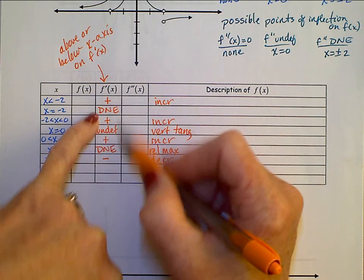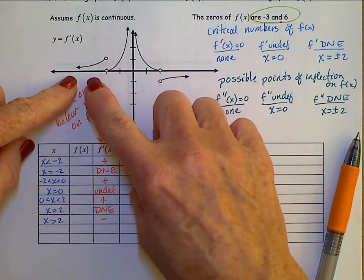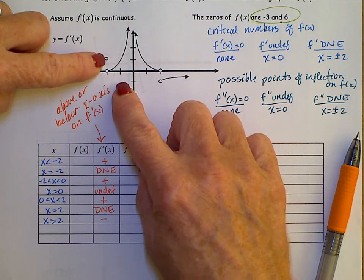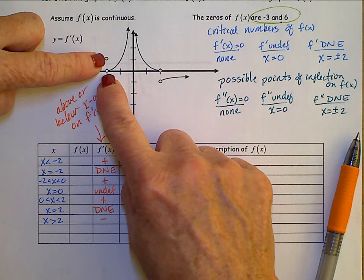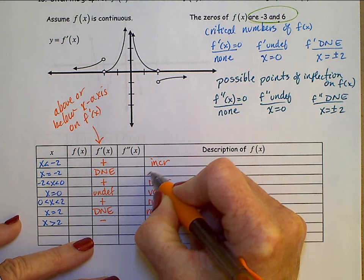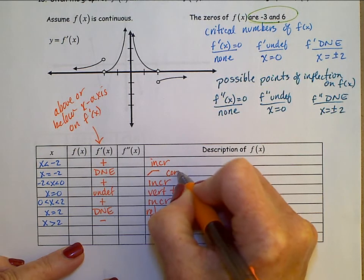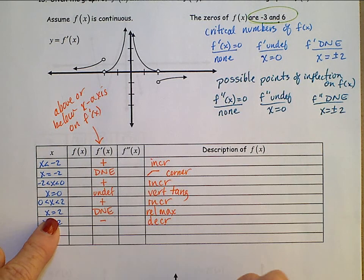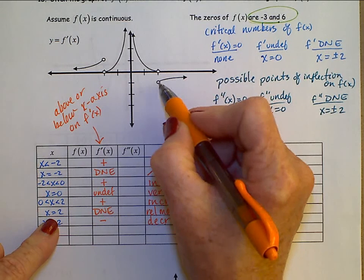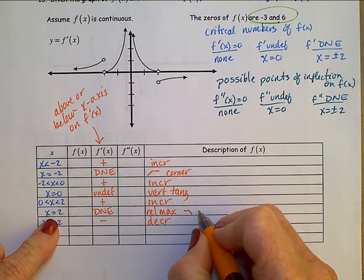For the does not exist values: as x gets close to negative 2, f prime gets close to 1 from the left, and close to 0 from the right. That means on the f of x graph we have a slope of 1 coming in and a slope of 0 going out — that's a corner. Likewise at x equals 2, coming in from the left we have a slope of 0, and from the right f prime approaches negative 1. So we have another corner there.